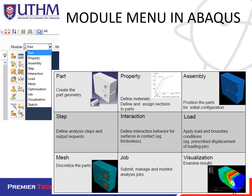These are the nine modules we are going to use. Part is for creating the part geometry — you draw all the geometry needed. Property is where you define materials and assign sections to the part, such as homogeneous sections.